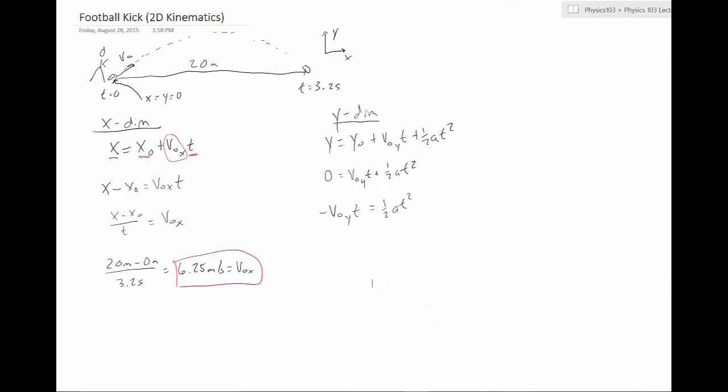Now, you notice I have a t over here and a t squared over on the other side. It turns out that as long as we can be sure that our time isn't equal to zero, and the time zero is basically just that initial point, basically, whenever we start out. So since we don't care about that, we can actually divide both sides by t. And then we get minus v zero y is equal to one half a t.